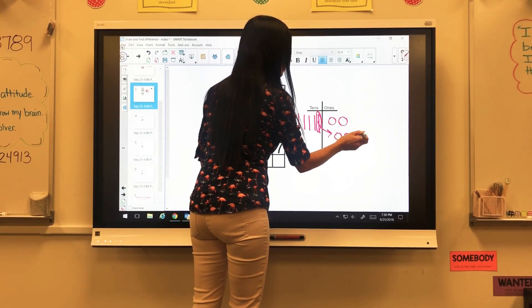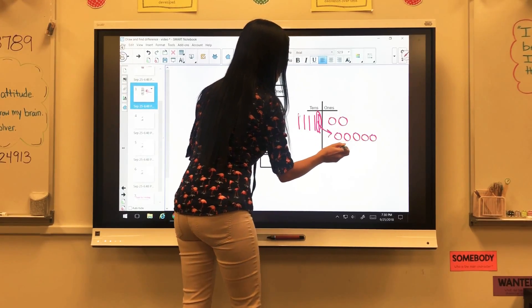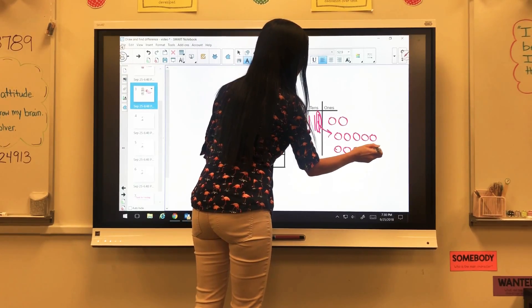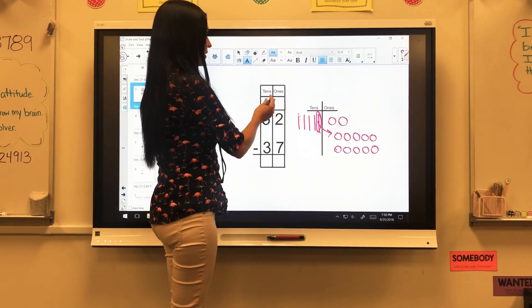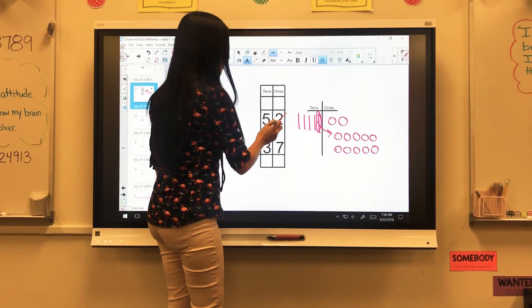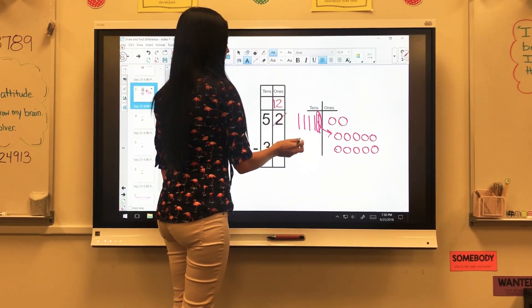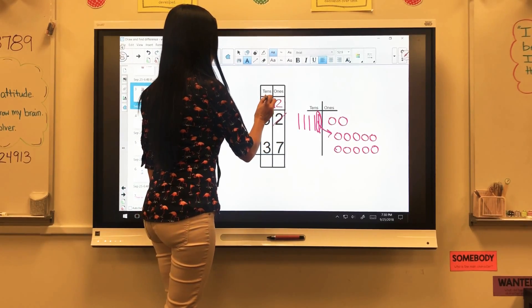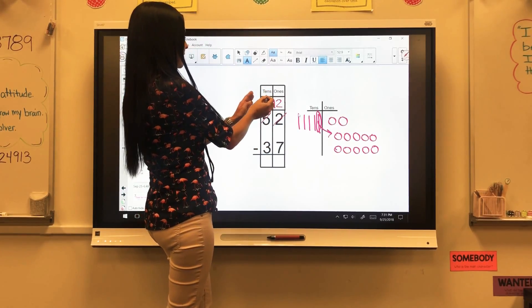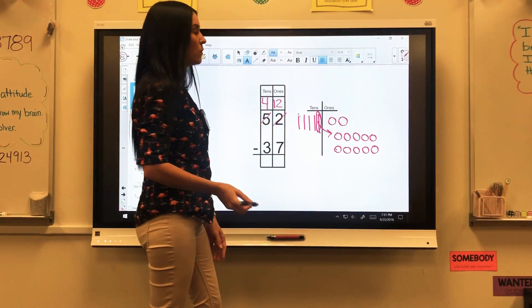So I'm going to take this 10 and I'm going to regroup it into 10 ones. 1, 2, 3, 4, 5, 6, 7, 8, 9, 10. And I need to show what I've done. So I no longer have 2 ones. I have 12 ones. And I no longer have 5 tens. I have 4 tens because I took the 10 from here and I moved it to my ones side.